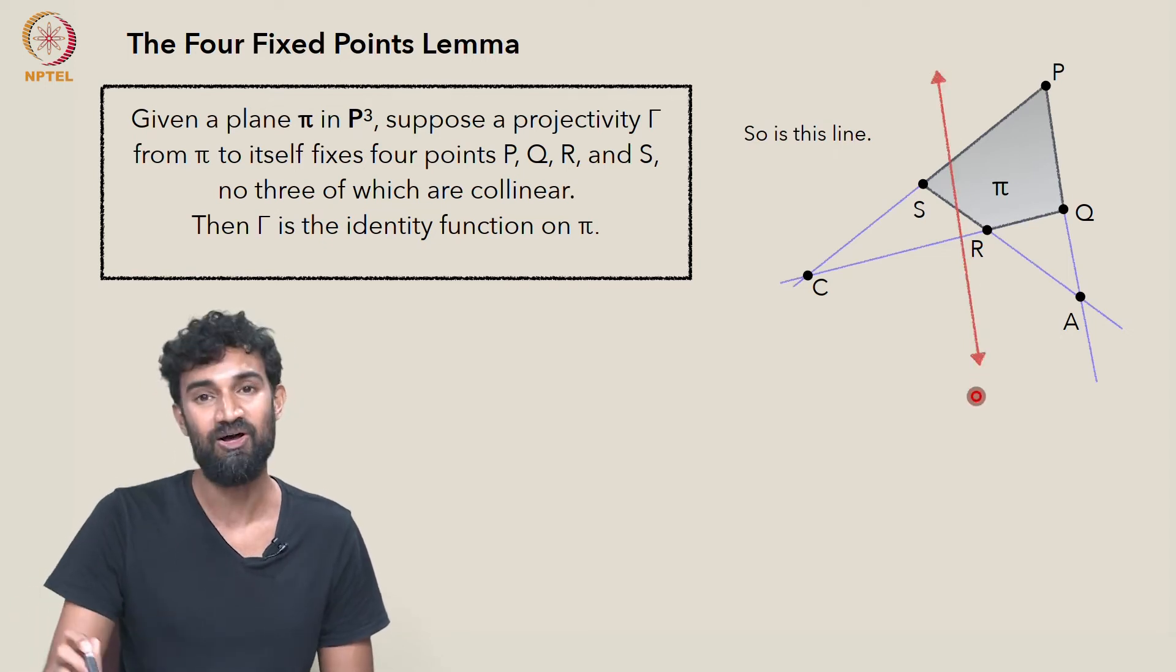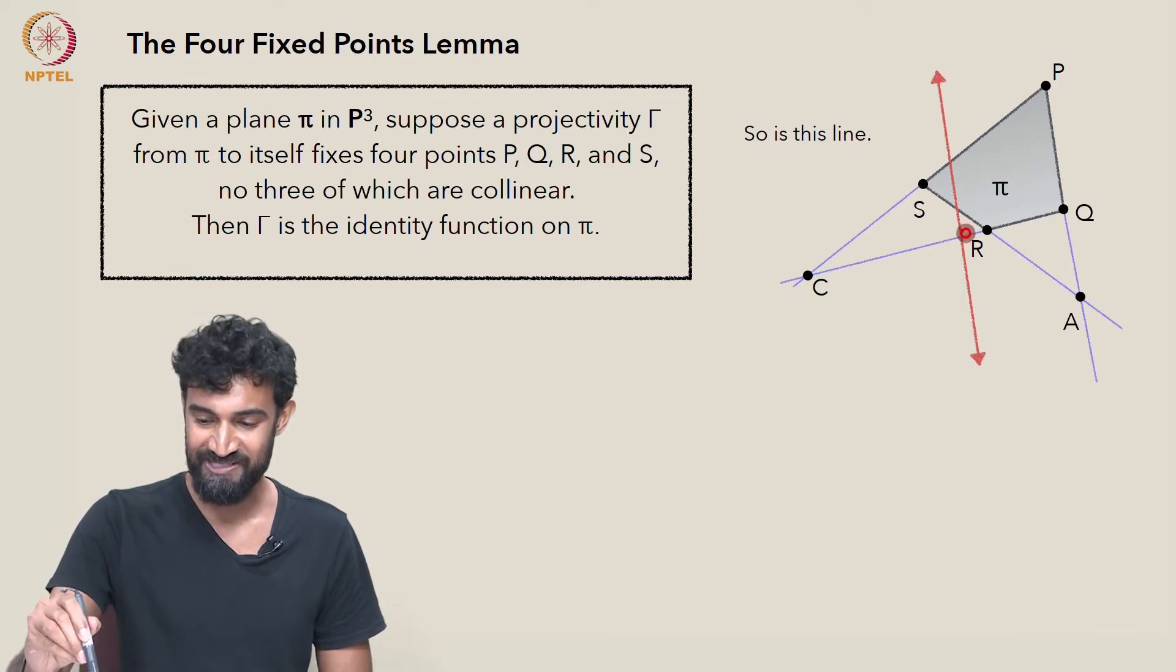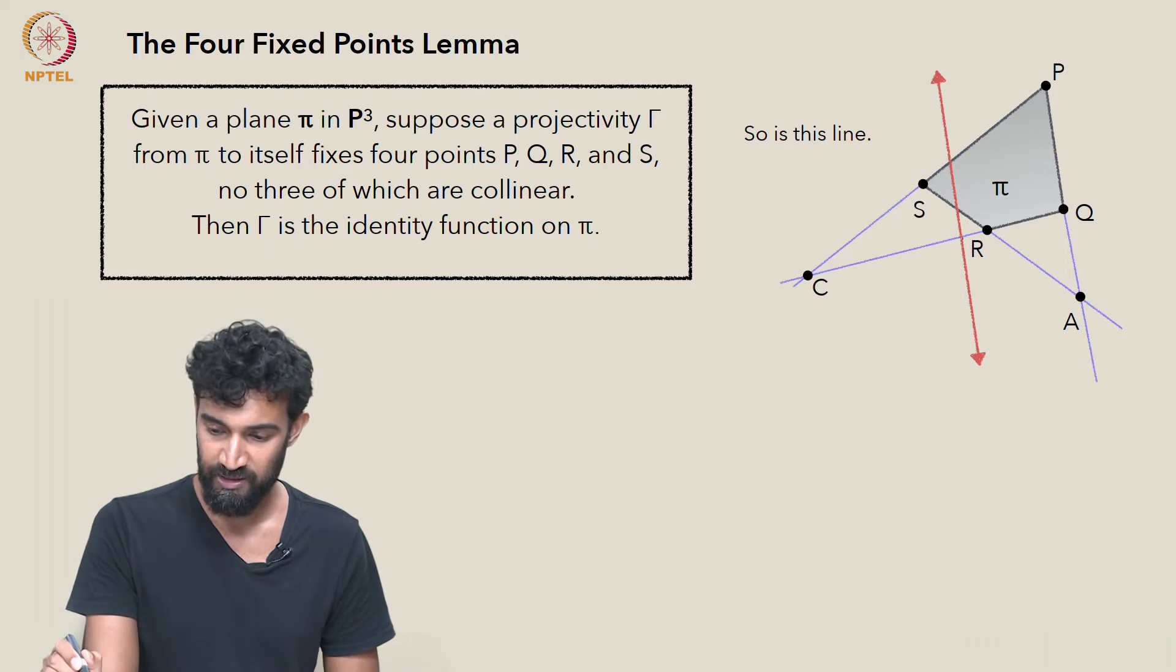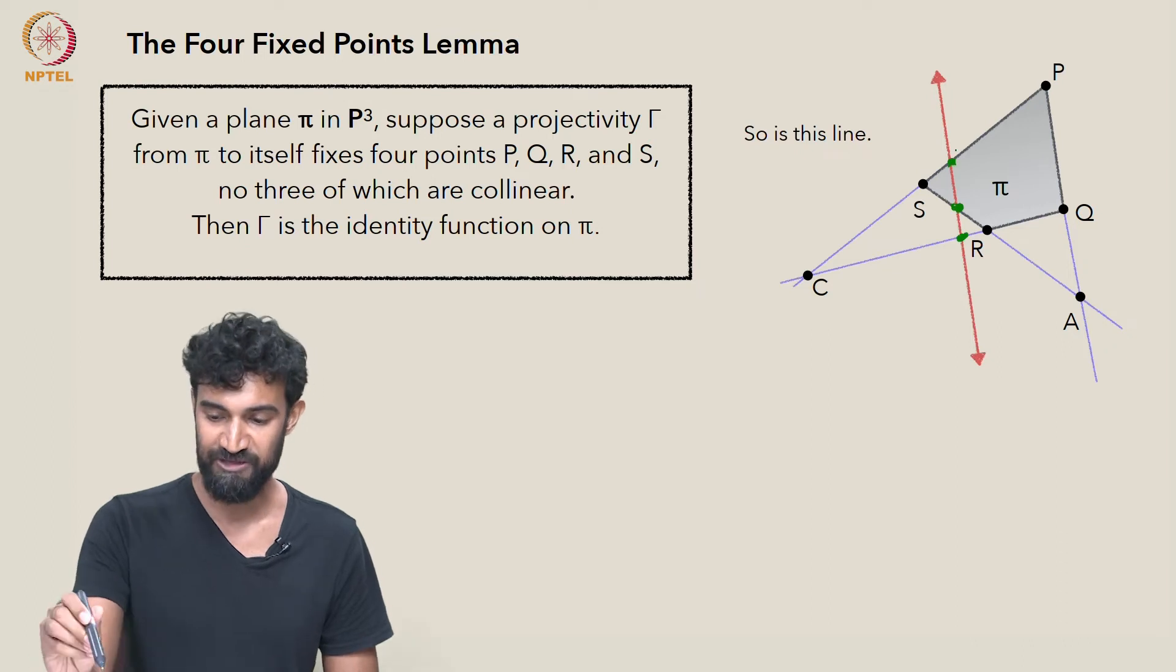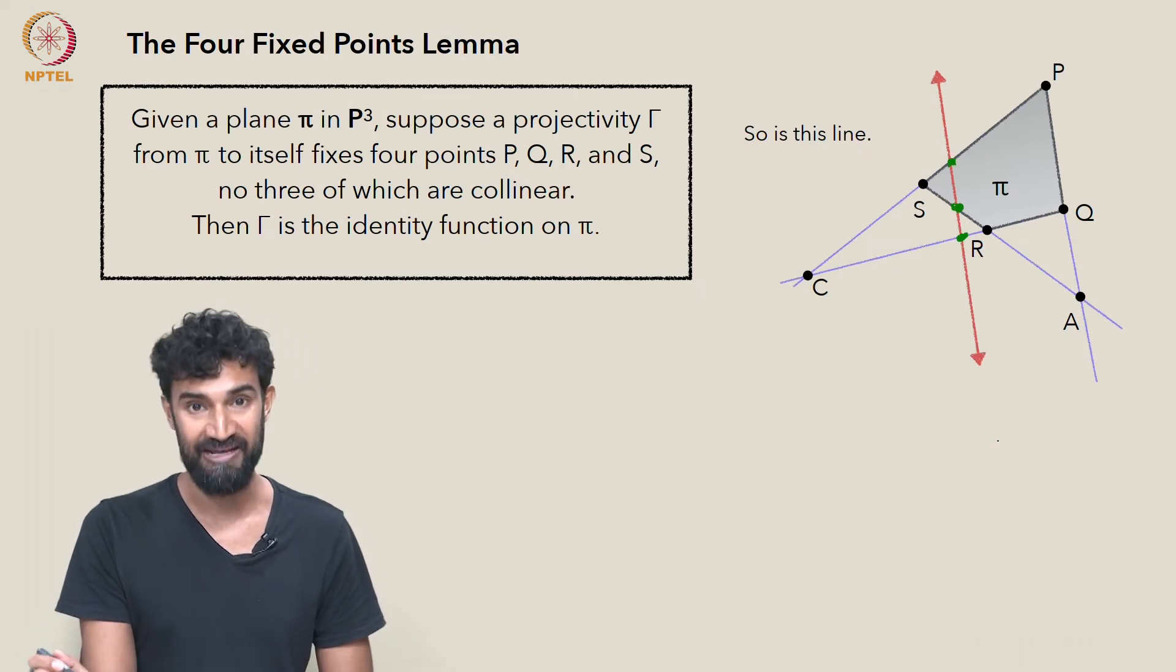And this line is also going to be fixed because this point is fixed—its intersection with this line, that's fixed, this is fixed, and this is fixed. So it contains three points which are fixed by γ. So by the three fixed points theorem, the entire line is fixed by γ.